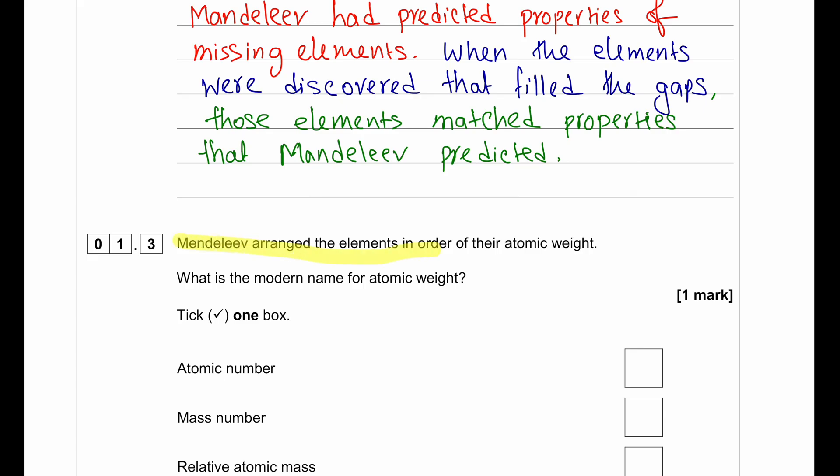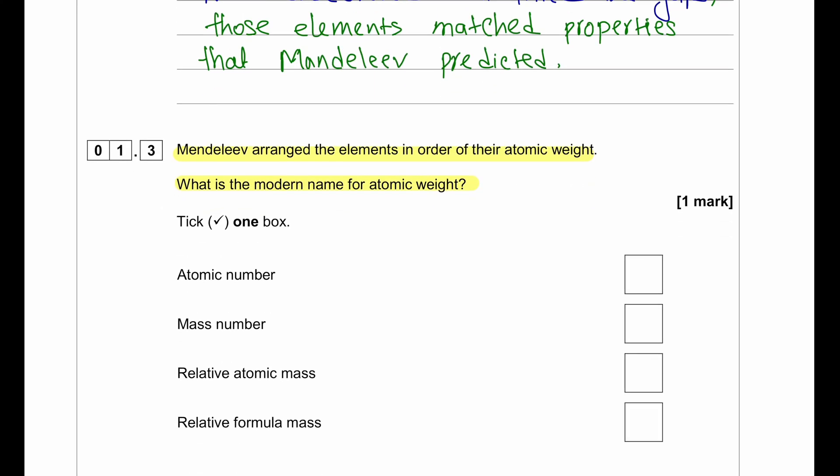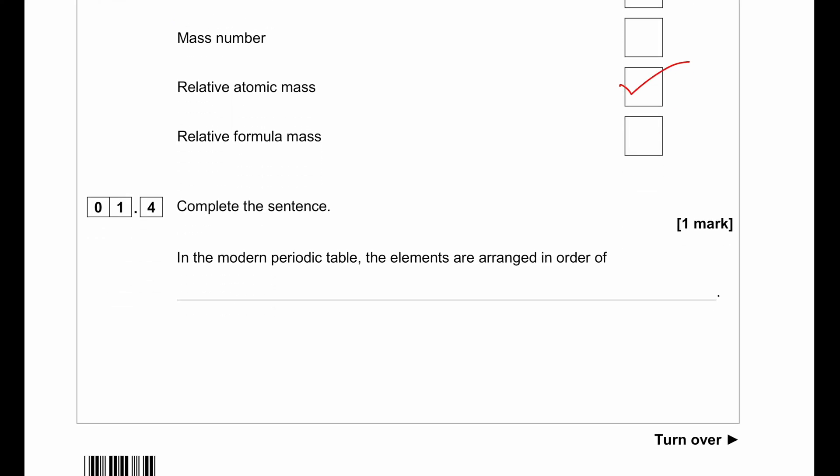Mendeleev arranged the elements in order of atomic weight. What is the modern name for atomic weight? Basically, when we talk about atomic weight we are talking about the relative atomic mass. In the modern periodic table, the elements are arranged in order of their proton number or atomic number.